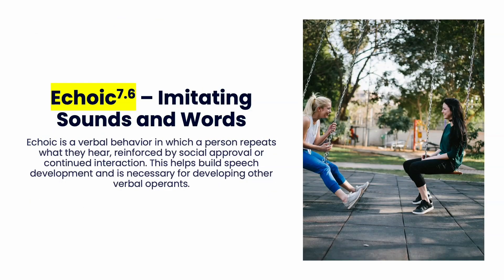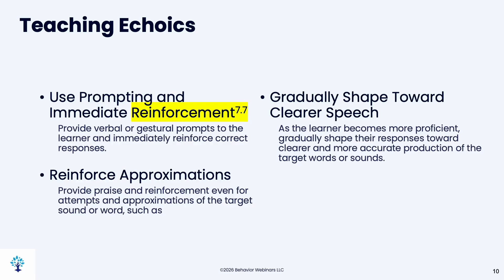Echoic is imitating. If one person says something and the other person repeats it, it needs to be exact for it to be an echoic. It helps build speech development and is a necessary step to create more speech. You want to provide immediate reinforcement. Once you get someone echoing you, you can start tacting — they'll be tacting because they're saying the same thing, but you need to get that mimic going so you can teach them more words and vocabulary. We do reinforce approximations, and the goal is gradually shaping towards clearer speech.